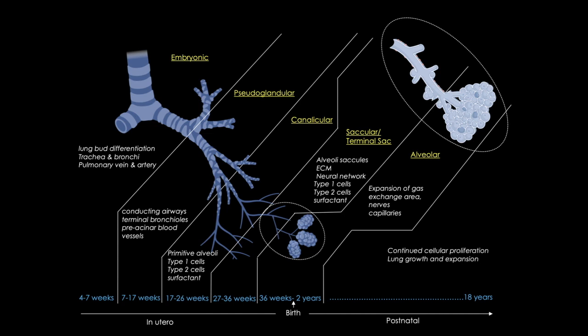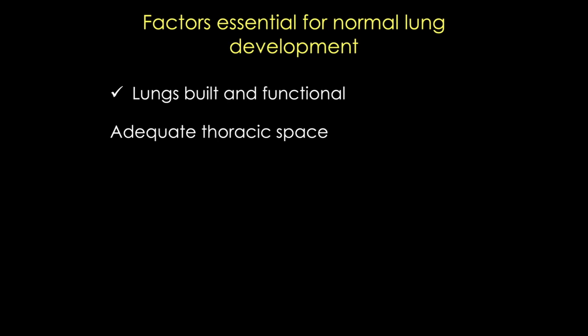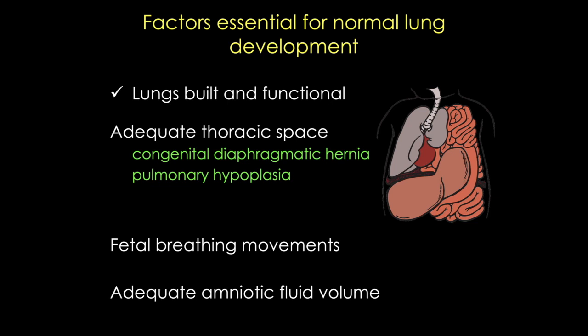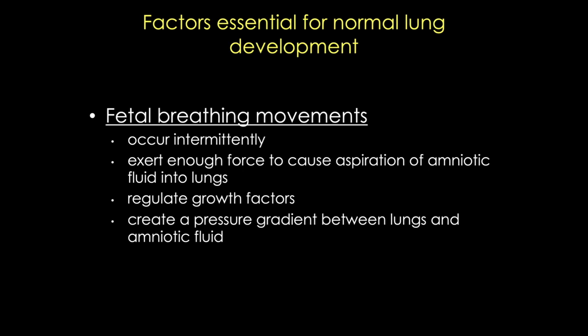There are a couple of other outside factors that are critical for lung development. If there isn't enough space in the thoracic cavity, the lungs can't develop — for example, in the case of congenital diaphragmatic hernia, seen here in this cartoon, the result is pulmonary hypoplasia. The second factor is fetal breathing movements, and the third is adequate volume of amniotic fluid. Fetal breathing movements are necessary to provide sufficient force to cause aspiration of amniotic fluid into the lungs, and to stimulate lung development by creating a pressure gradient between the lungs and the amniotic fluid. Fetal breathing movements are decreased with hypoxia, smoking, narcotics, and even during labor.